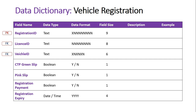For field sizes, we can read directly from the format of each field. The Registration ID is nine characters in length, the License ID is eight characters, and the Vehicle ID is six characters. CTP Green Slip, Pink Slip, and Registration Payment are boolean fields needing only one character — Y or N — though you could extend to three characters to spell out yes or no. Registration Expiry needs four digits for the year.